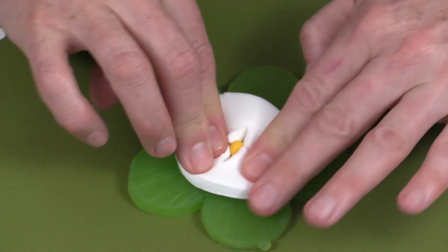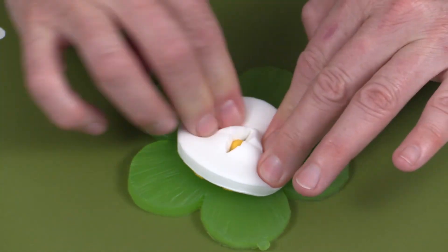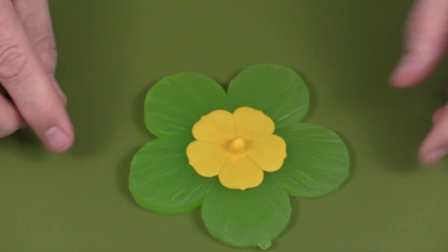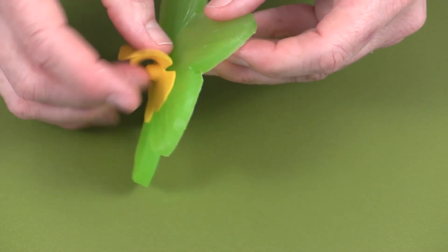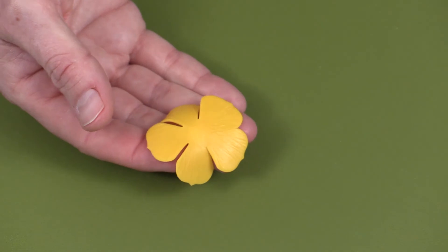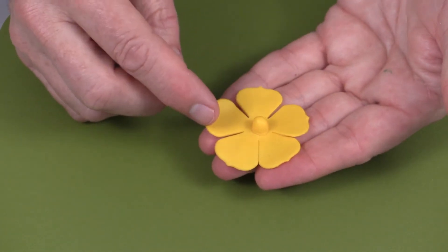And then once you press around the outside of it, you see we haven't then squashed the little hat. So then when you take this off of the veiner and you have your veining onto the petals and then of course you'd soften the edge of this and hollow it.